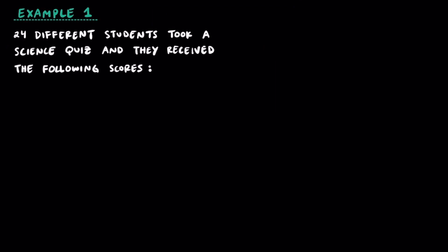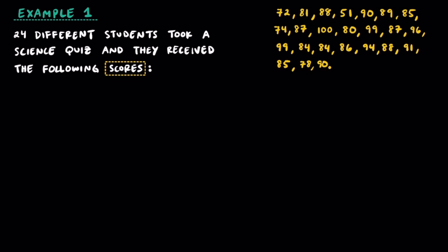Let's try this problem here. 24 different students took a science quiz, and they received the following scores. Here they are to the right. So we already have our statistical question, and we have our data collected, so let's make a frequency table, and then make a histogram.